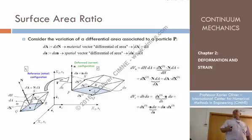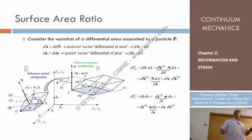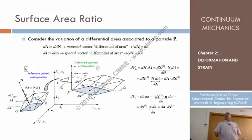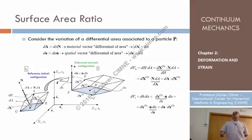We consider a particle P at the reference configuration on a differential of surface defined by two adjacent particles Q and R. This gray region defines the differential of surface, and they belong to a certain material surface whose normal is capital N — a unit normal with modulus one. We can talk about what is called the vector differential of area, which is defined as a vector whose modulus is the scalar differential of area and whose direction is given by N.